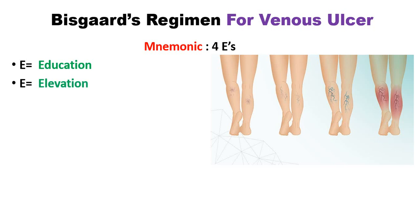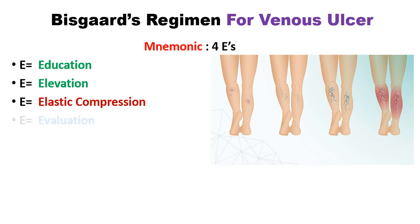The third E is Elastic compression of the leg — it is also used for varicose veins but it is also included in the PISCARD regime. The fourth E is Evaluation — we will further evaluate the cause of the venous ulcer. So these are the four E's for the PISCARD regime.